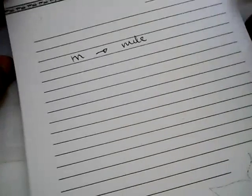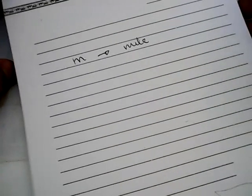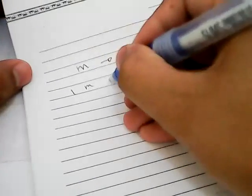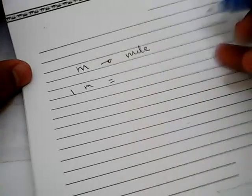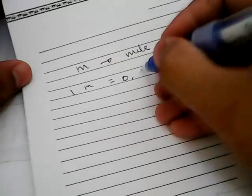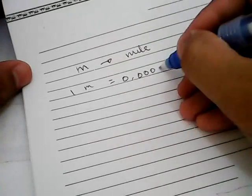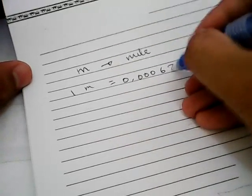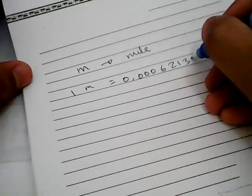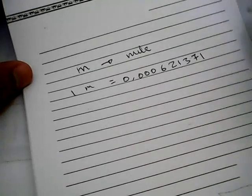Now, before we start our example equation for this conversion, you need to know that 1 meter is equal to 0.00062137 mile.